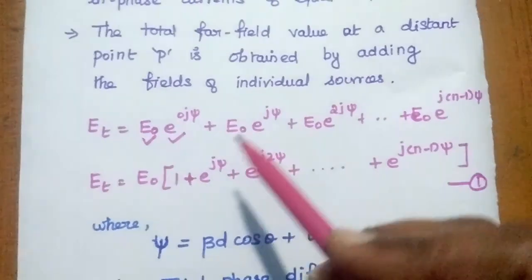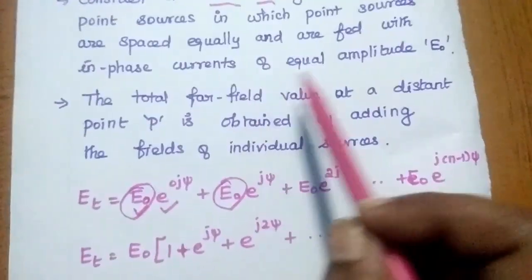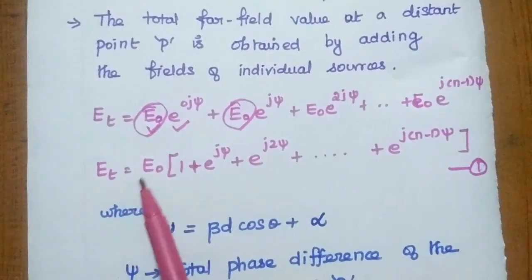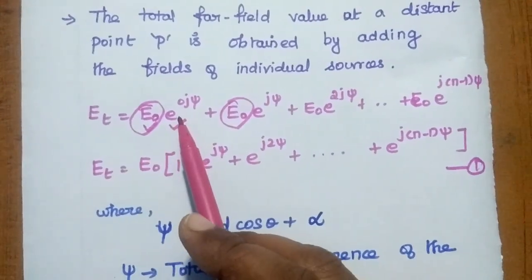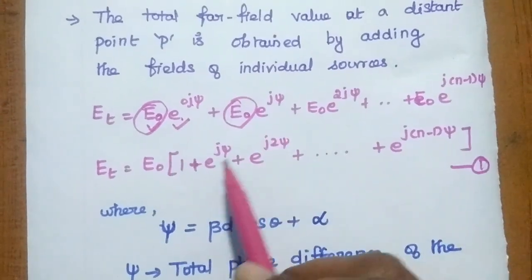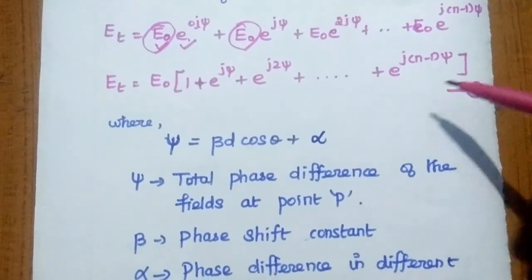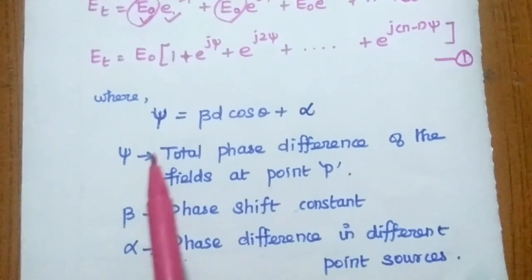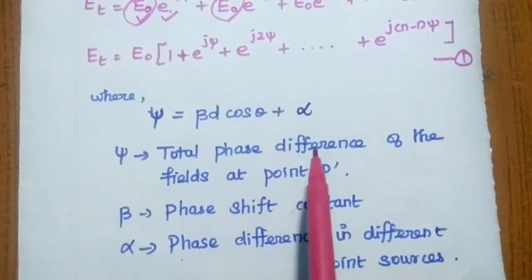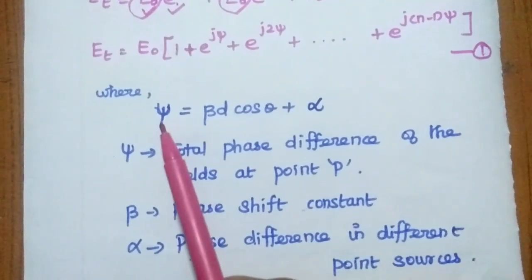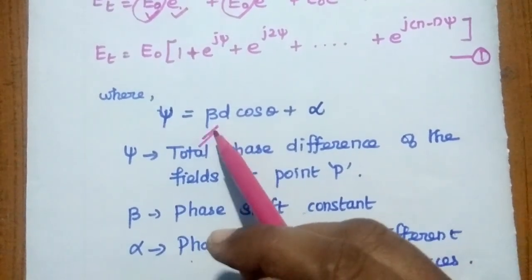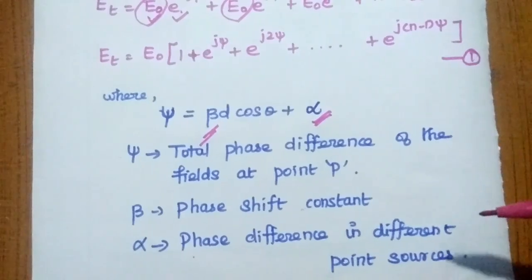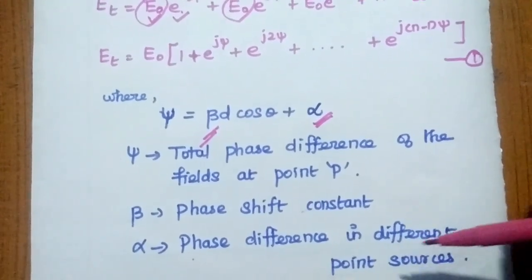The total electric field E_T equals E₀ into the sum: 1 + e^(jψ) + e^(j2ψ) + ... + e^(j(N−1)ψ). Since E₀ is common to all elements (equal amplitude), we take it outside. Here ψ = β·d·cos(θ) + α, where ψ is the total phase difference of the fields at point P, β is the phase shift constant, and α is the phase difference between adjacent point sources.